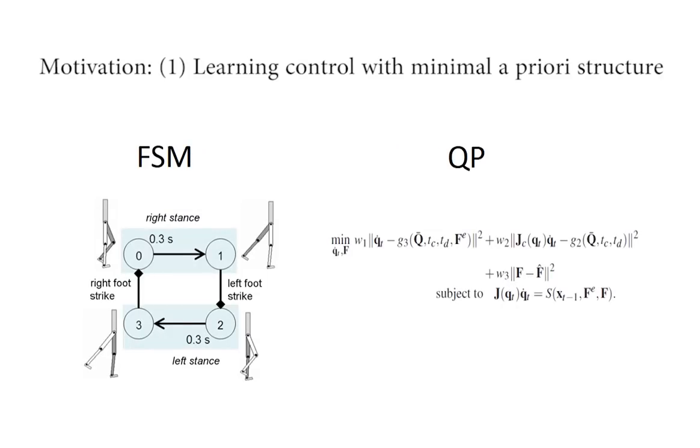Motion control is a challenging problem. Nearly all previous solutions make use of high-level features, such as the center of mass, some high-level structure, such as a finite state machine, or assumed knowledge of the dynamics.